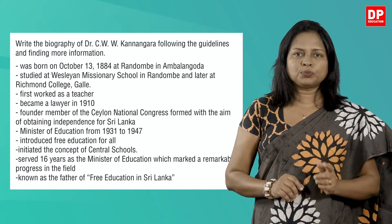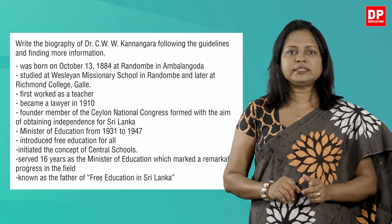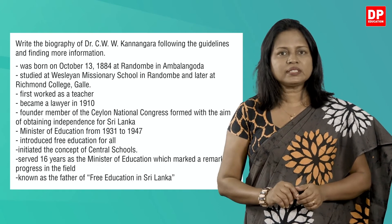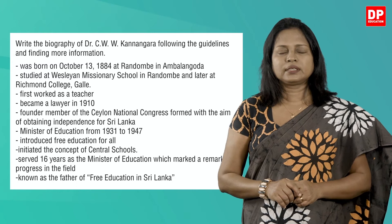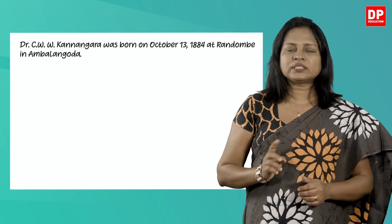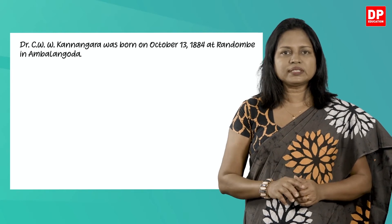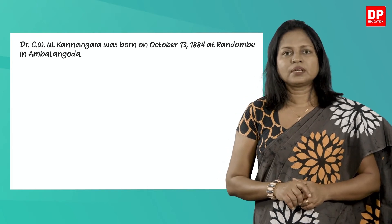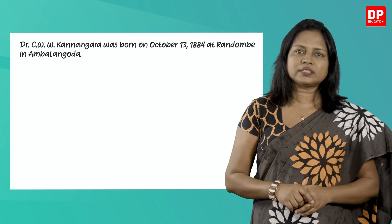You all know about Dr. C.W. Kannangara, who is considered as the father of free education in Sri Lanka. Now let's see how we can write the first sentence with the given information. The first point says 'was born on October 13th 1884 at Randon Bay in Ambalangoda.' As it is your first sentence, you have to write his name and start, so you can write like this: 'Dr. C.W. Kannangara was born on October 13th 1884 at Randon Bay in Ambalangoda.' Okay children, pause the video and write the rest of the biography.